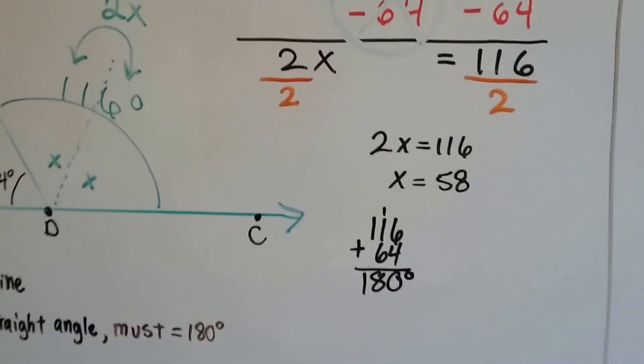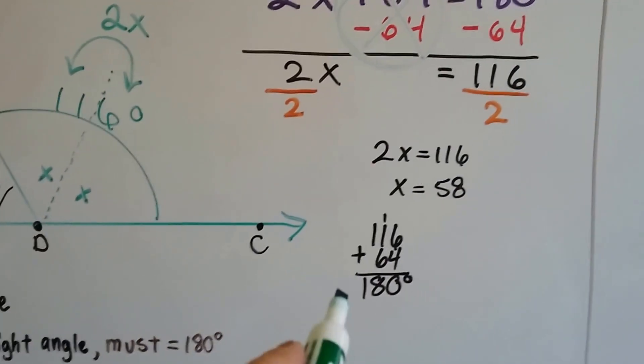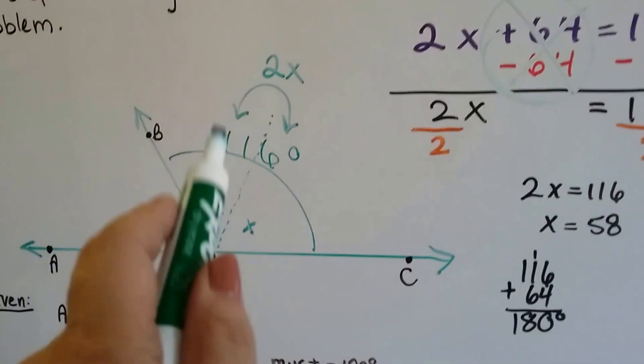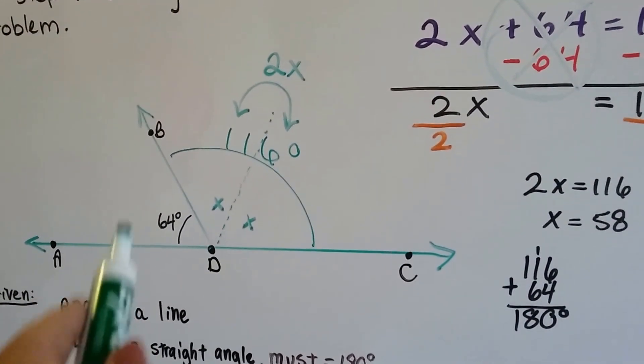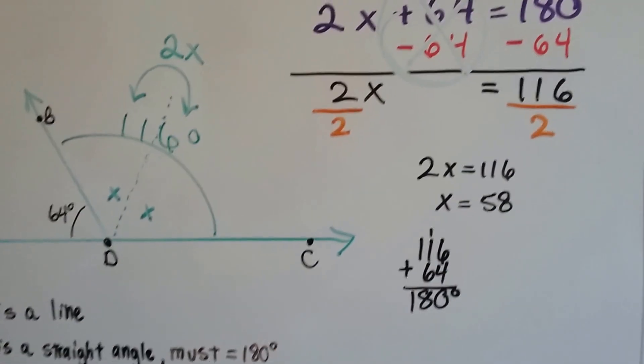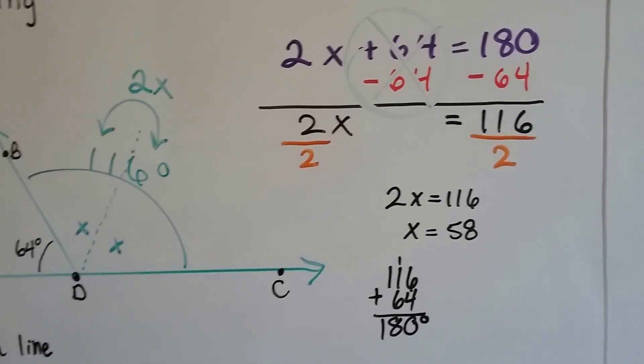And we can check it and plug it in and see if it works. 116 plus 64 equals 180. So because 116 and 64 equal the 180, we know we got the right answer. That wasn't too bad, was it? Alright, let's try another one.